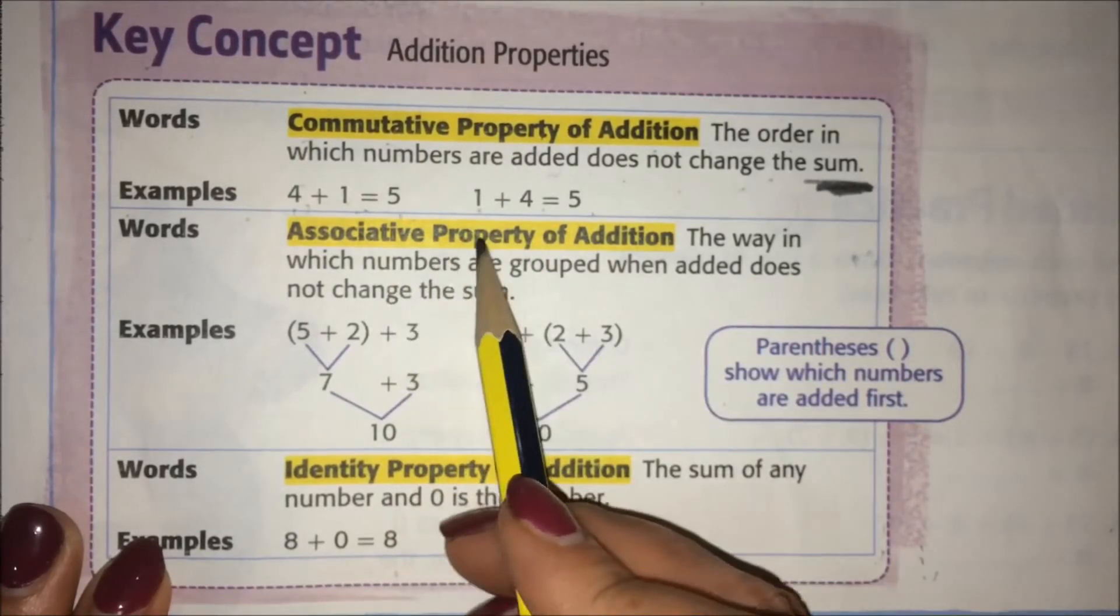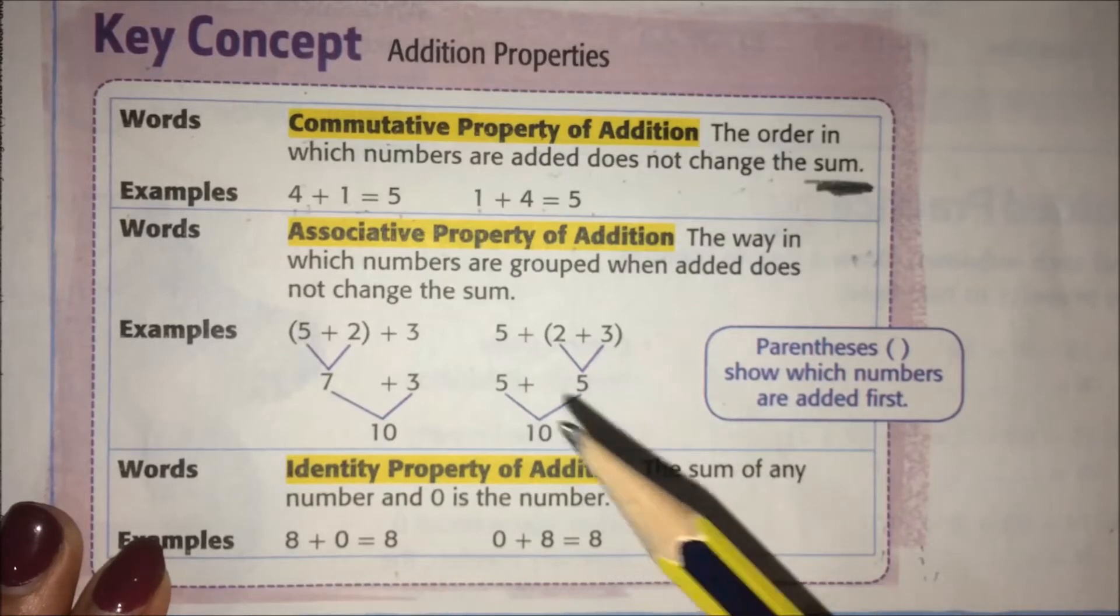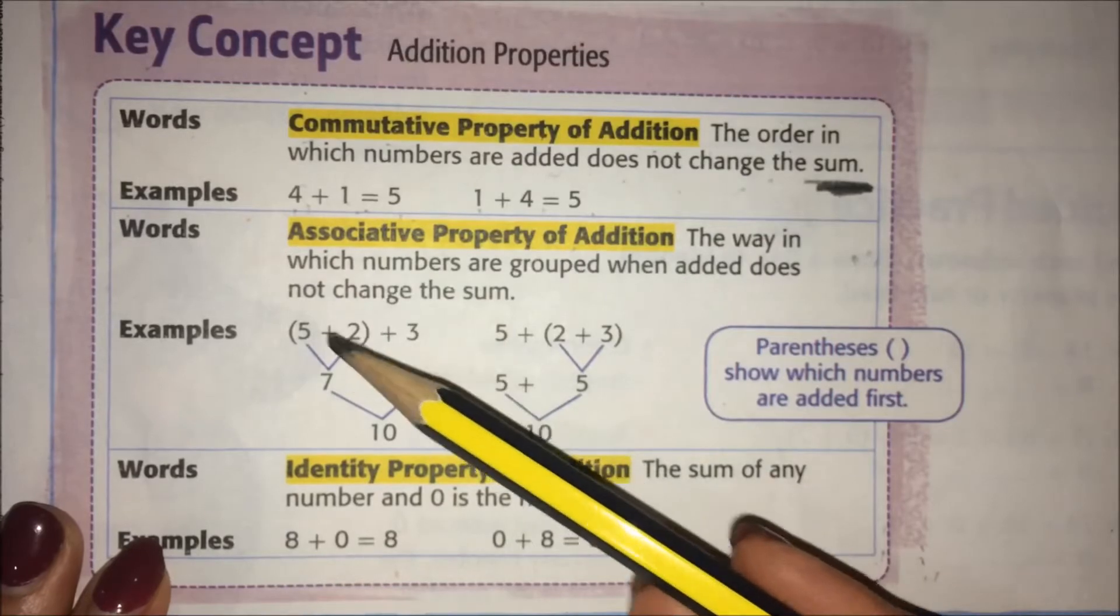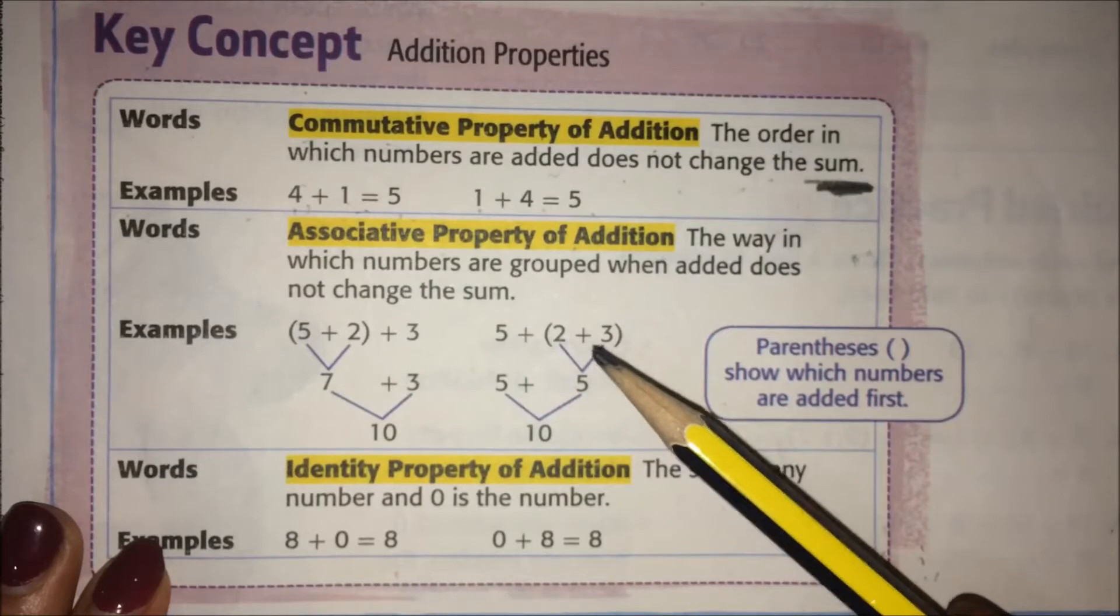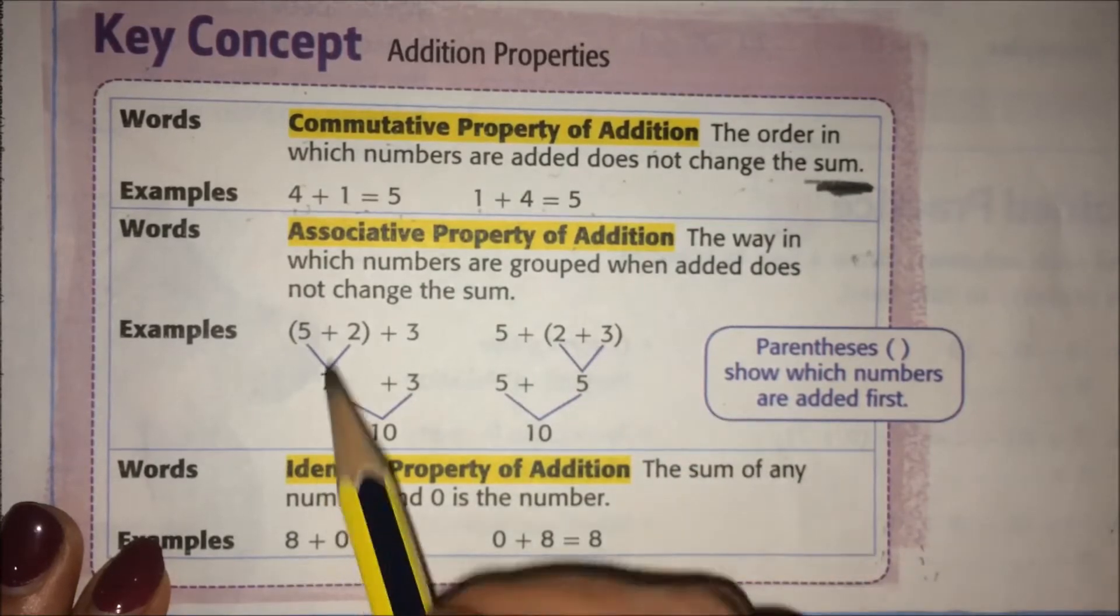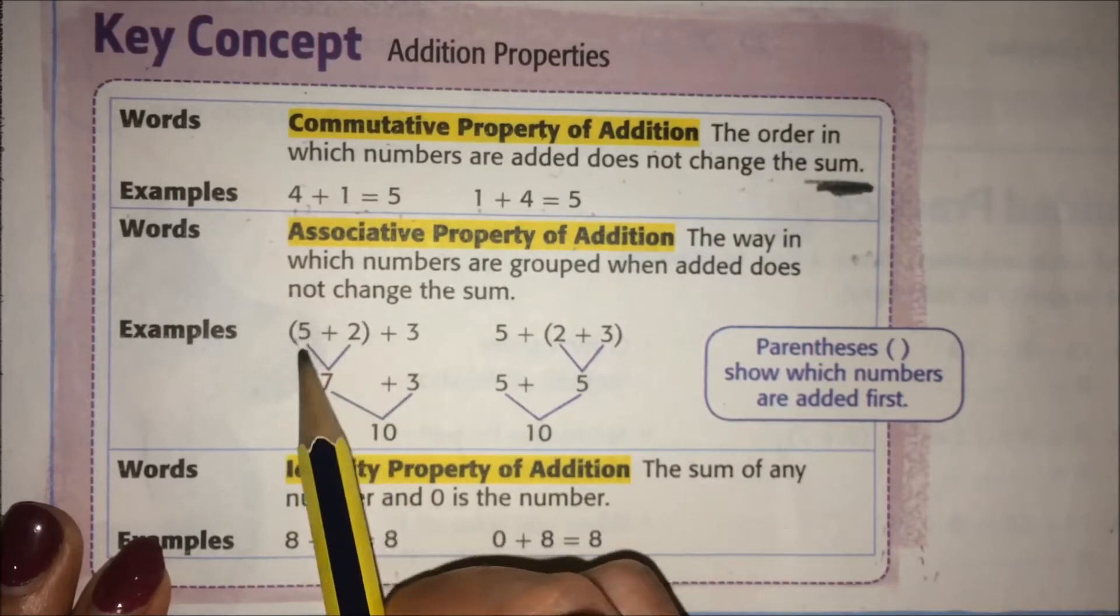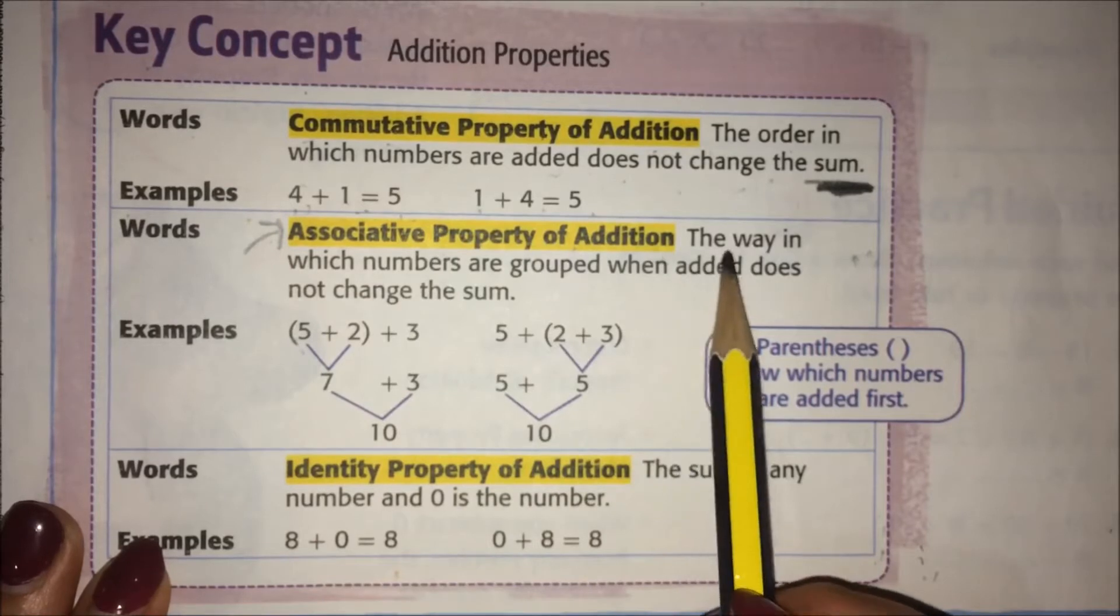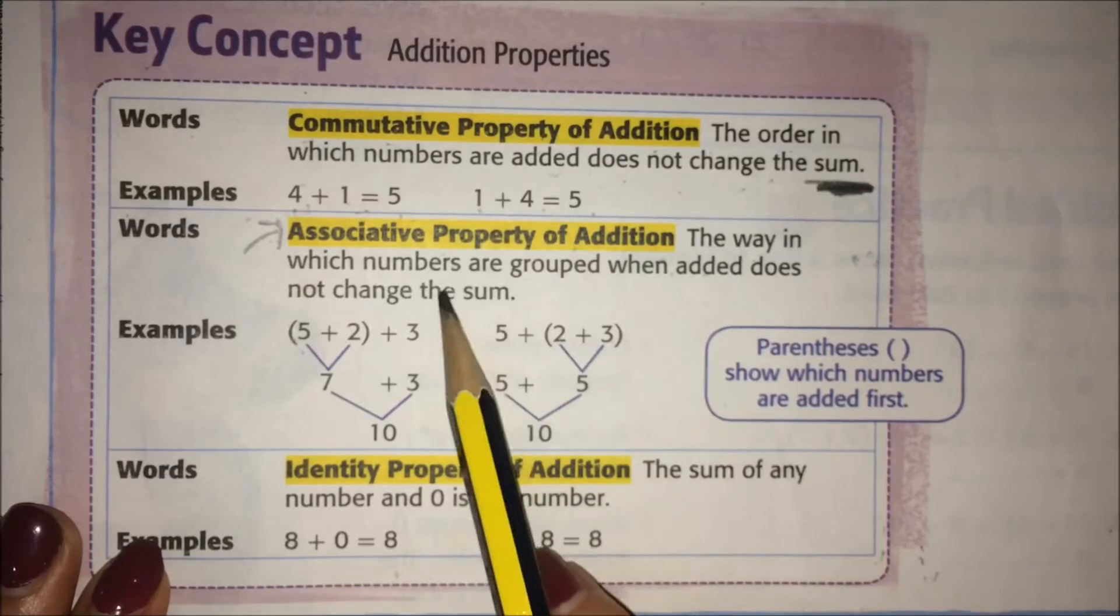Here's the associative property of addition. The word associate means people who are together. Associates are people that work together. So you can think about who's associated or who's working with—which numbers are working together, the ones inside the parentheses. Any time you have a question that has parentheses, you can guess that it's the associative property.